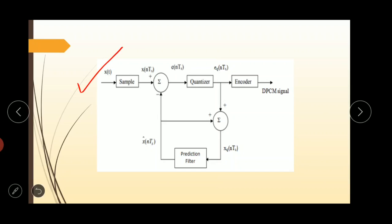Sampler, by satisfying the condition FS greater than or equal to 2FM, samples the input signal. And at the output, the sampler, we get our samples. And that sampled signal is denoted as X of NTS.